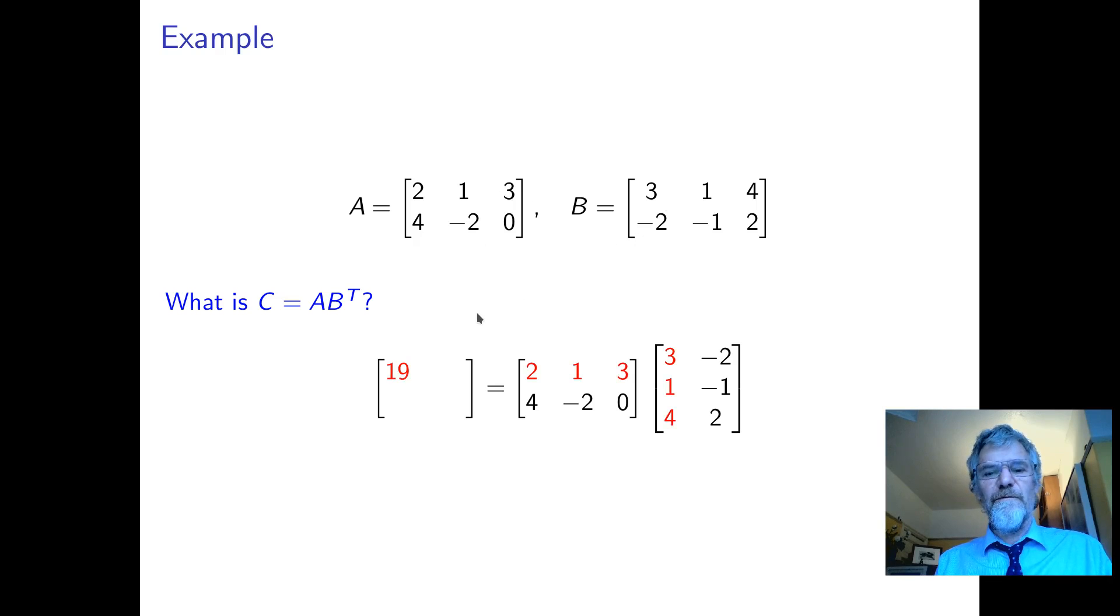And we can just work it out by multiplying the rows of this by the columns of B transpose, which of course are the rows of B. To get the thing in the first row, second column, we take the first row of the first matrix and the second column of the second matrix, and so on.